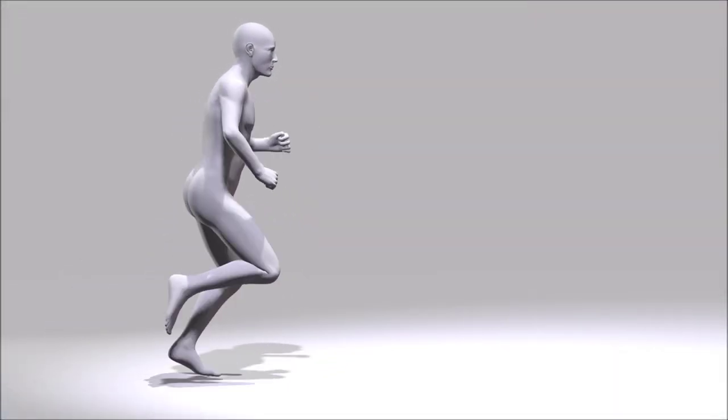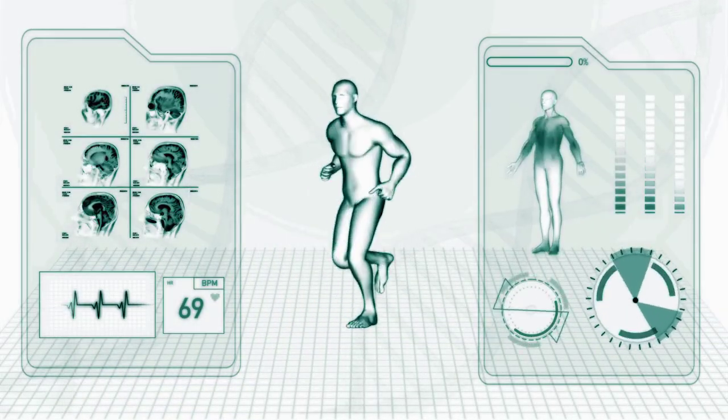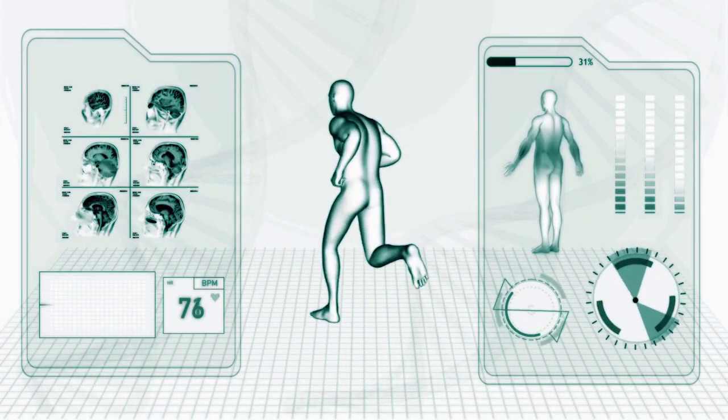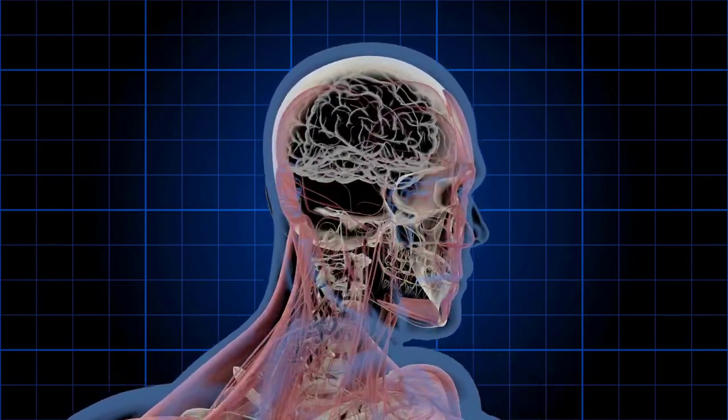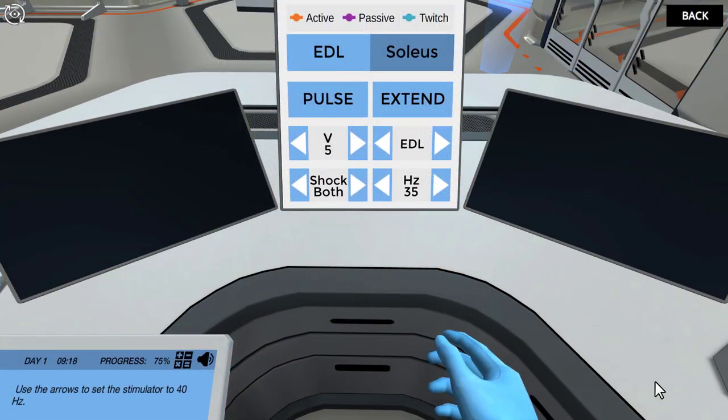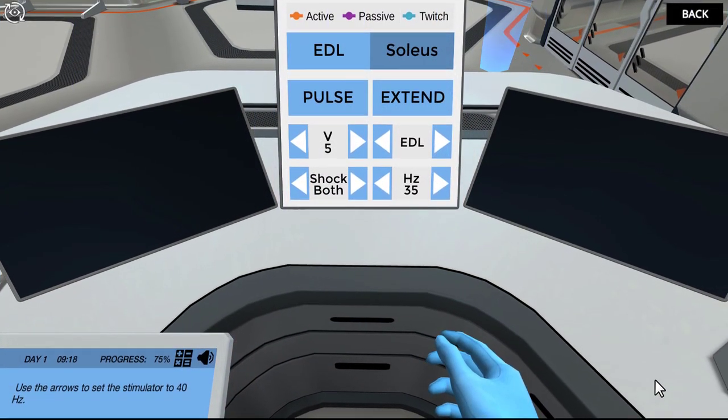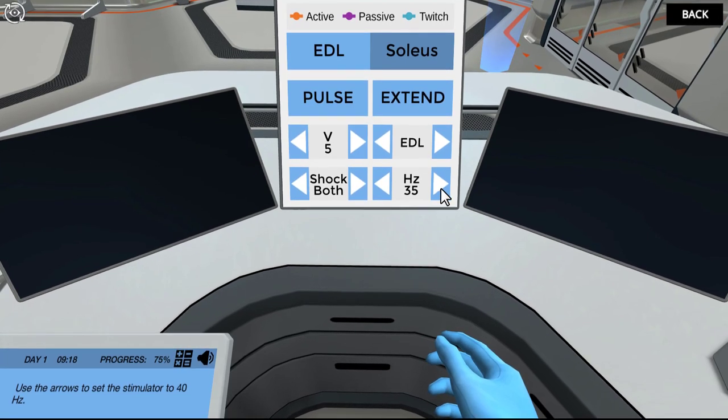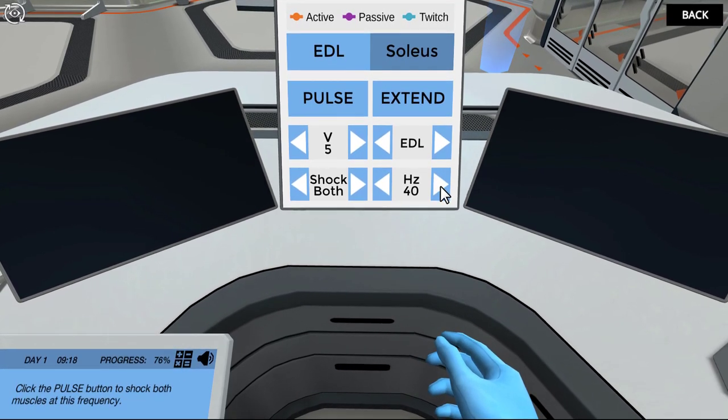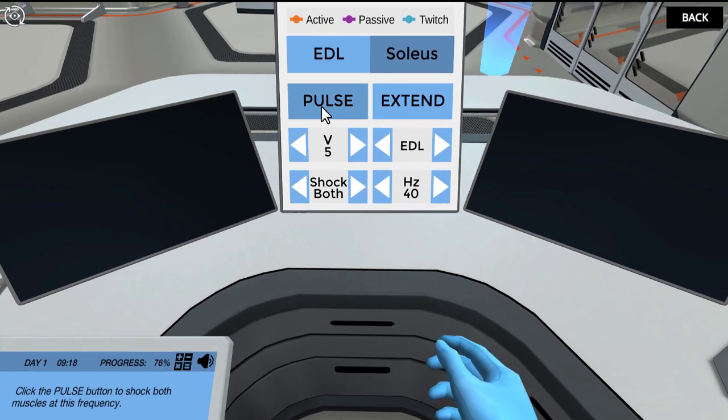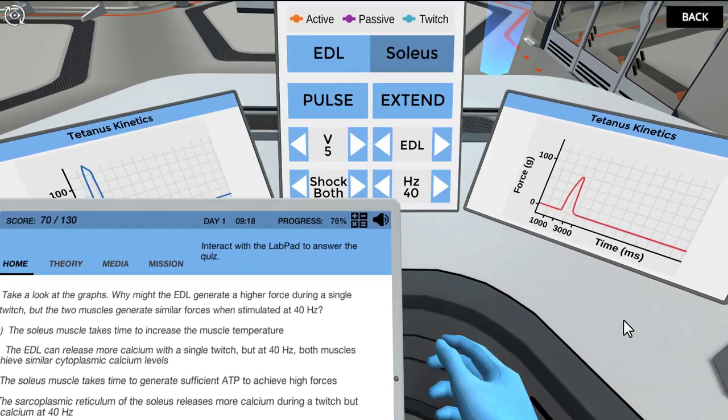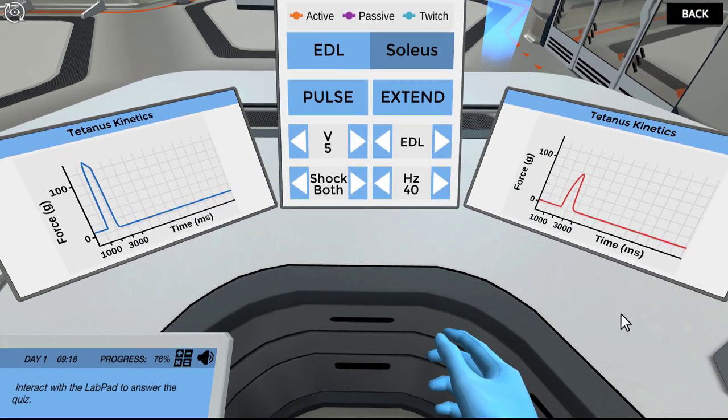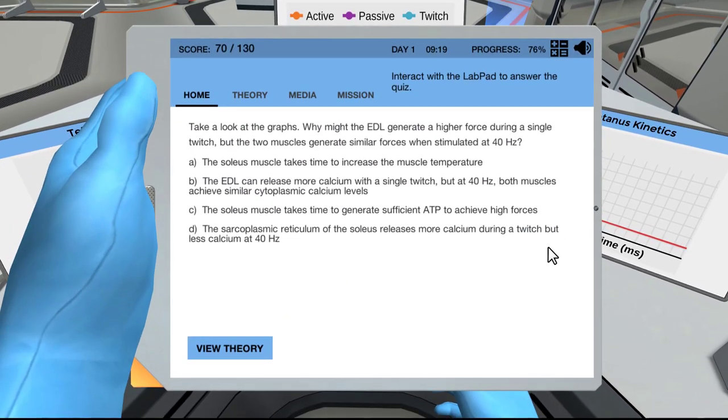In summary, with a single twitch, the EDL generates a lot more force than the soleus. Let's figure out if this remains true if we stimulate the muscles many times quickly. This is called tetanus kinetics, when a muscle sustains contraction for a period of time. The first thing we need to do is set the frequency of the stimulations, let's set it for 40 hertz. This means the muscles would be shocked 40 times per second. Click the pulse button to shock both muscles at this frequency. Take a look at the graphs. Why might the EDL generate a higher force during a single twitch, but the two muscles generate similar forces when stimulated at 40 hertz? Amazing! The soleus releases calcium to the cytoplasm and pumps it back to the sarcoplasmic reticulum more slowly than the EDL during a twitch, but at 40 hertz, enough calcium is released from the sarcoplasmic reticulum to achieve much higher forces.